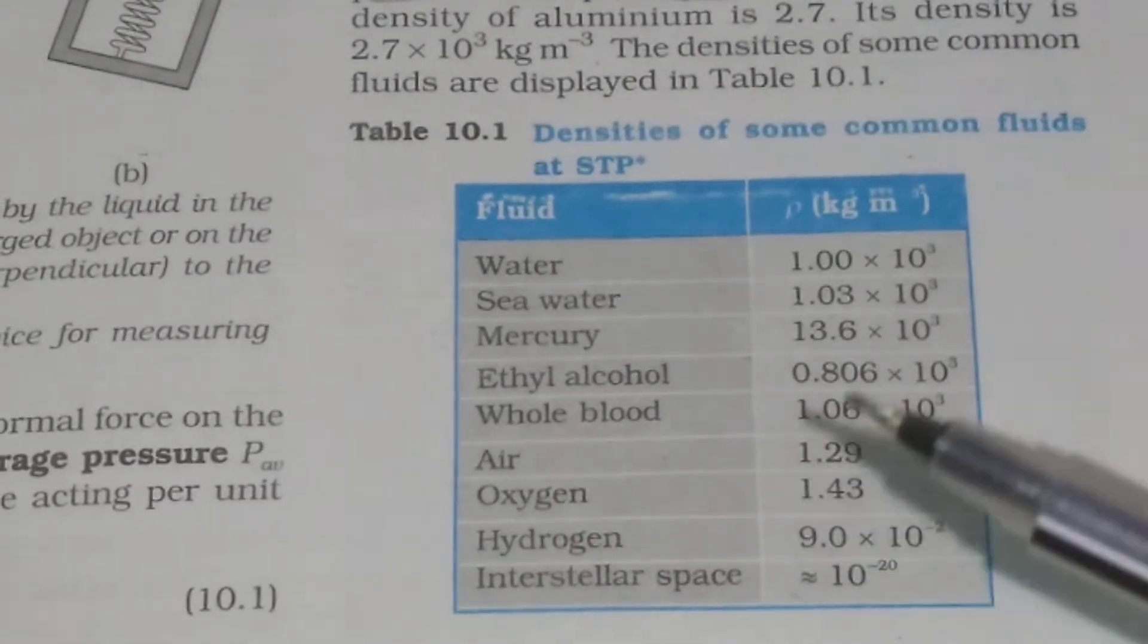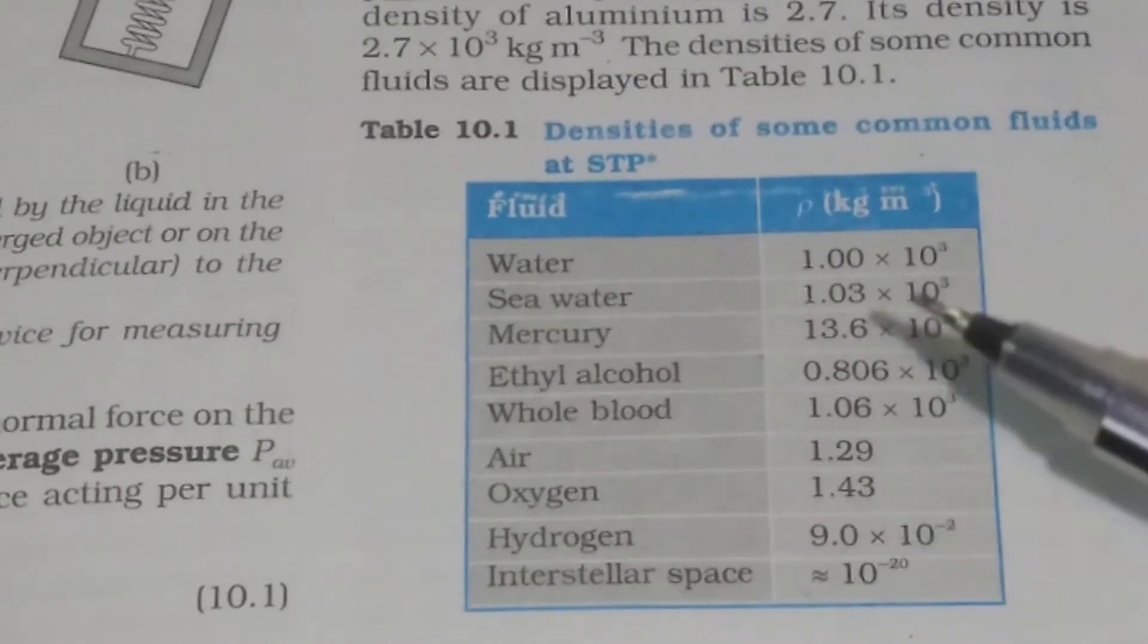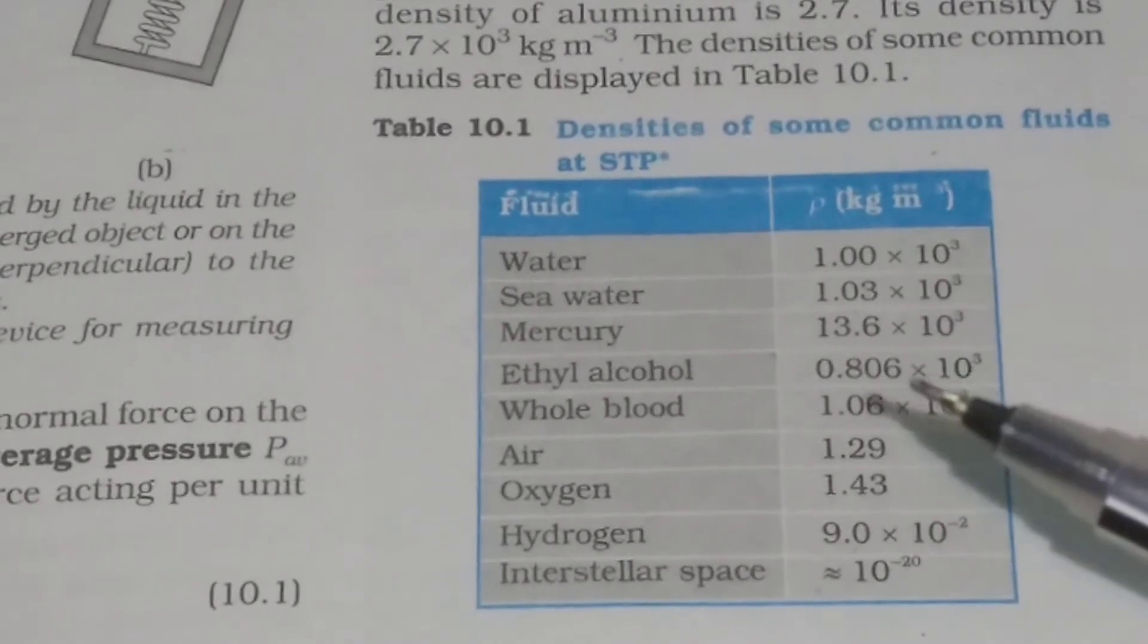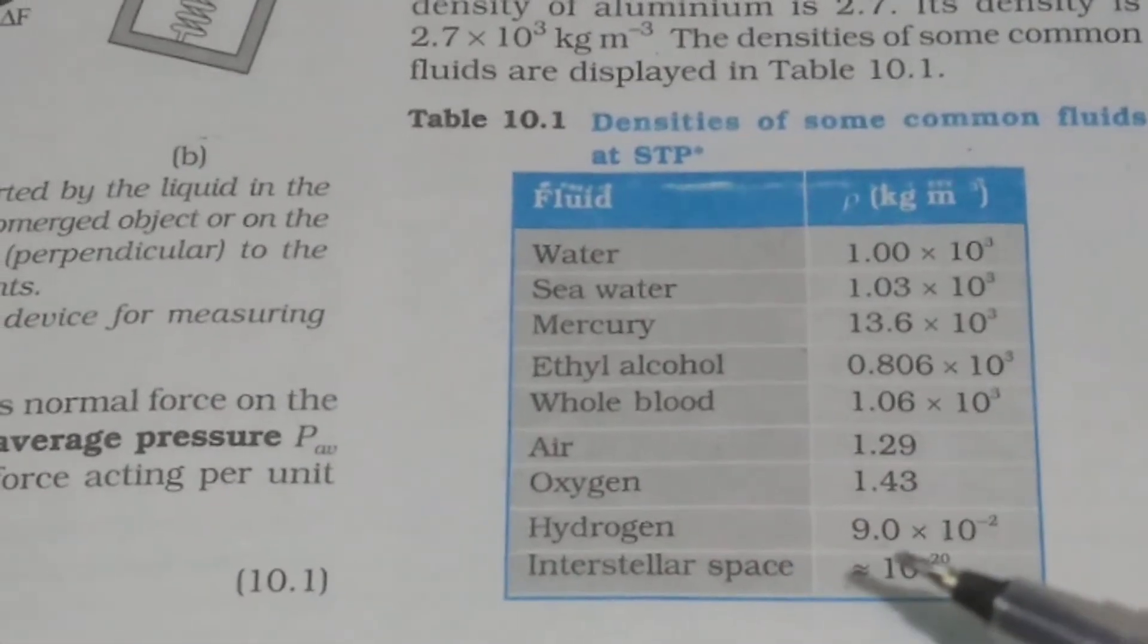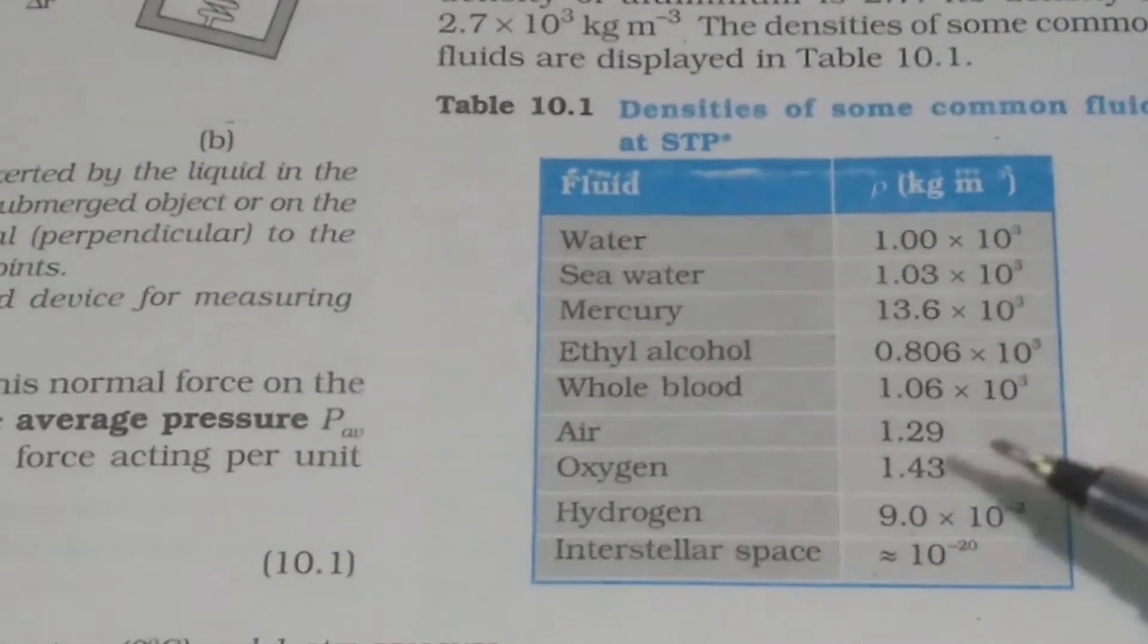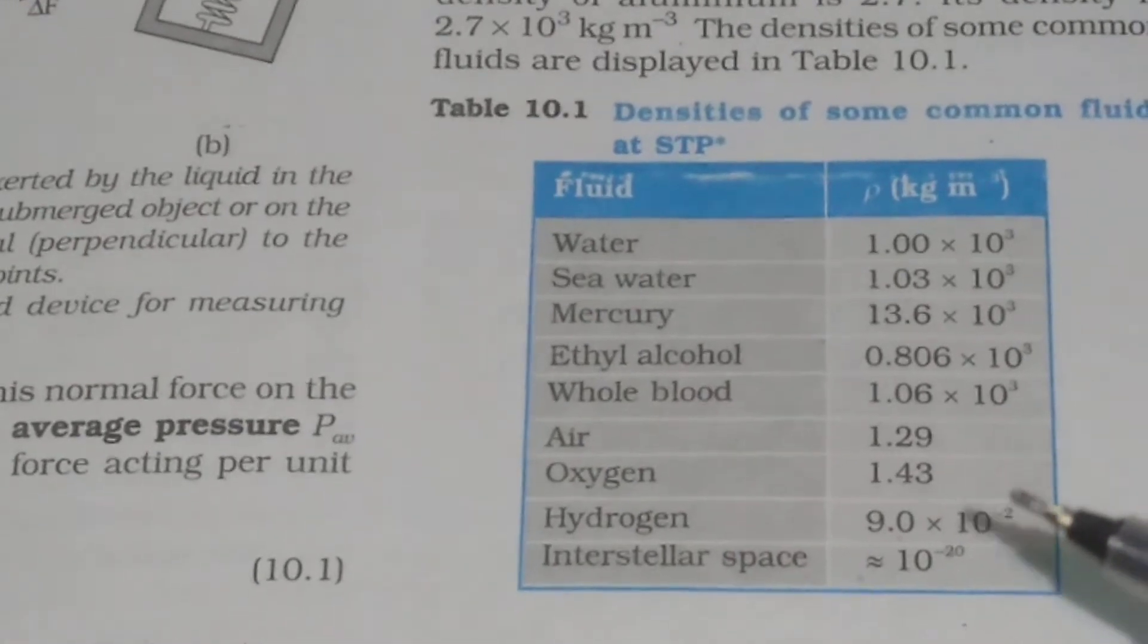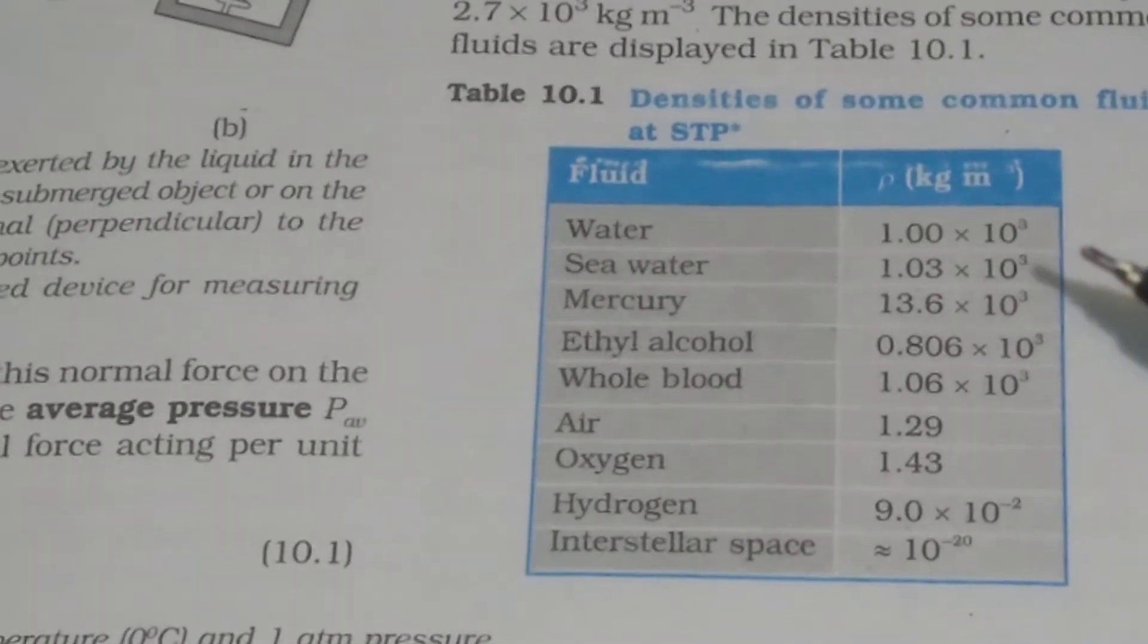For air, you see the density is 1.29 kg per meter cube. So for air, oxygen, hydrogen and interstellar space, you see how the densities are very small in comparison to the liquids.